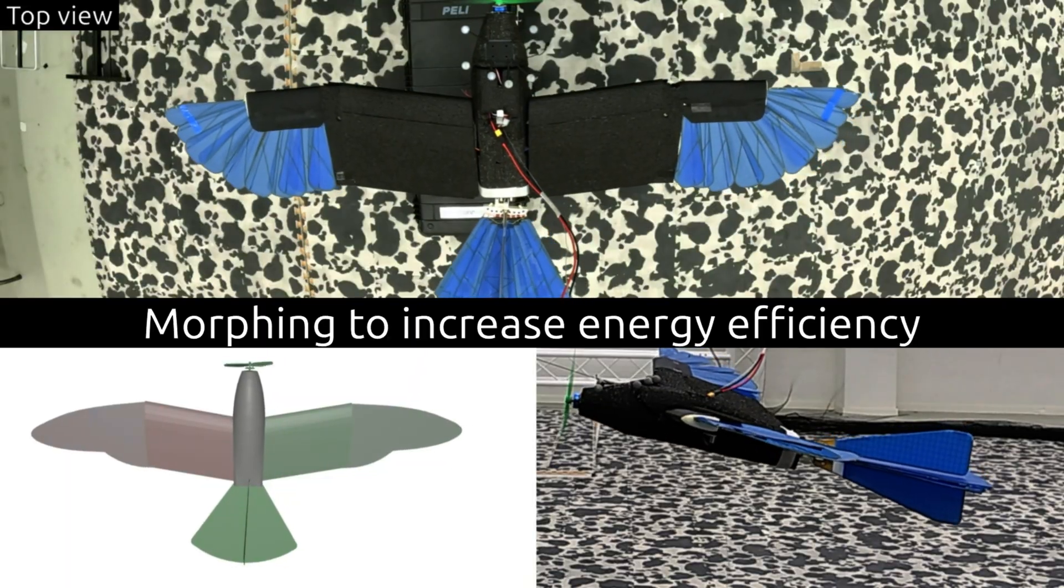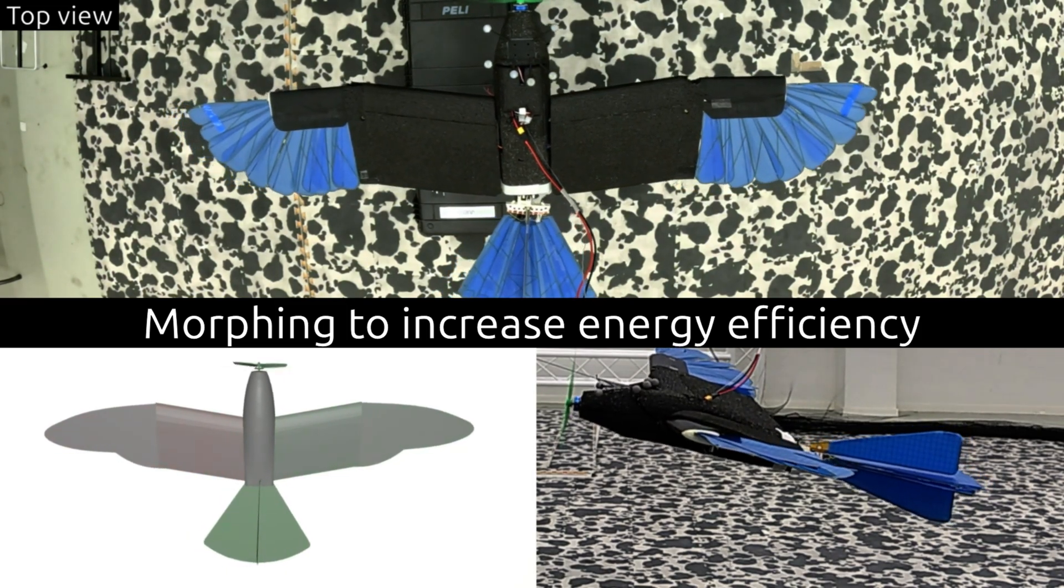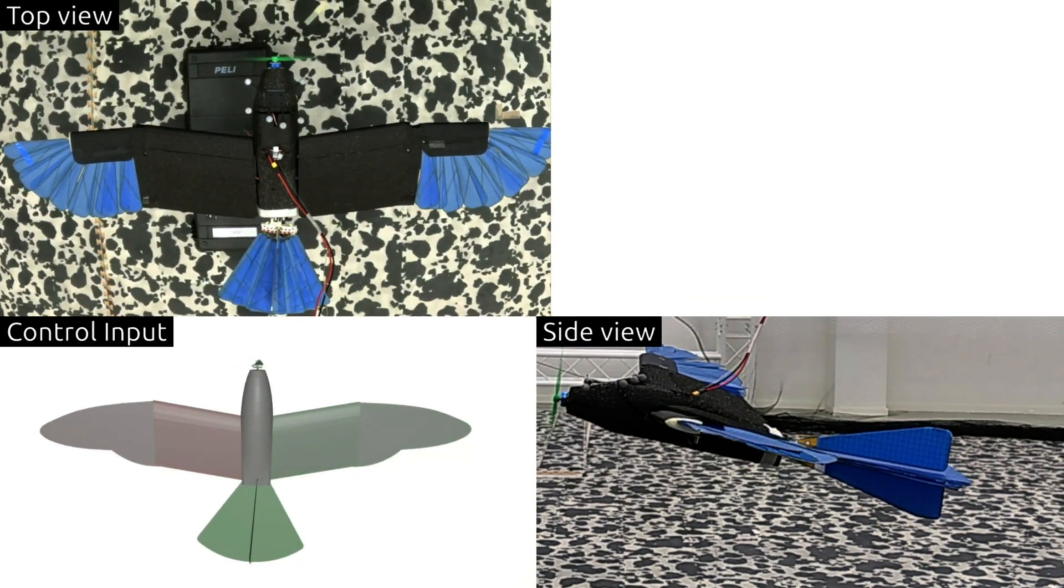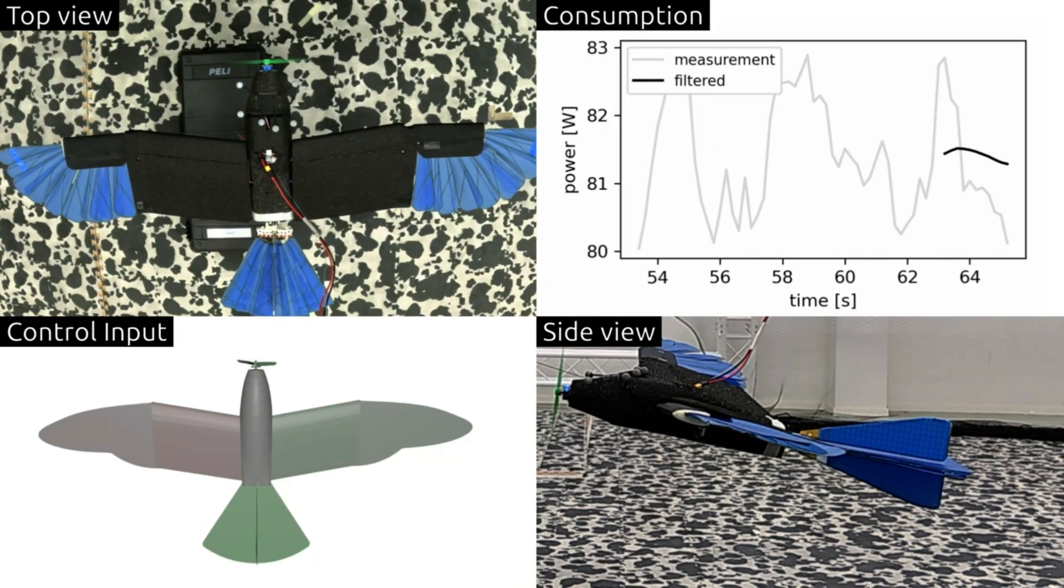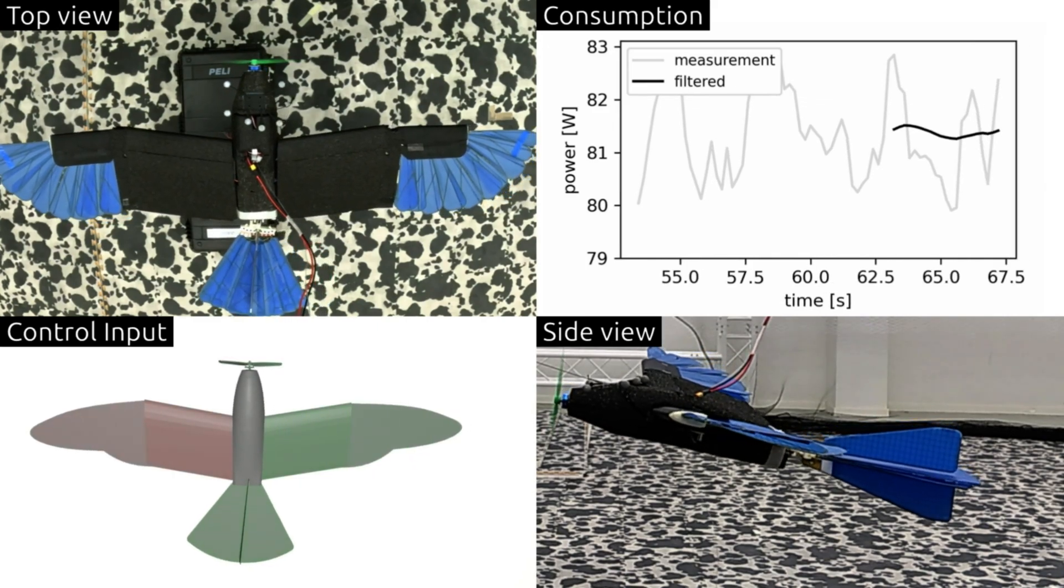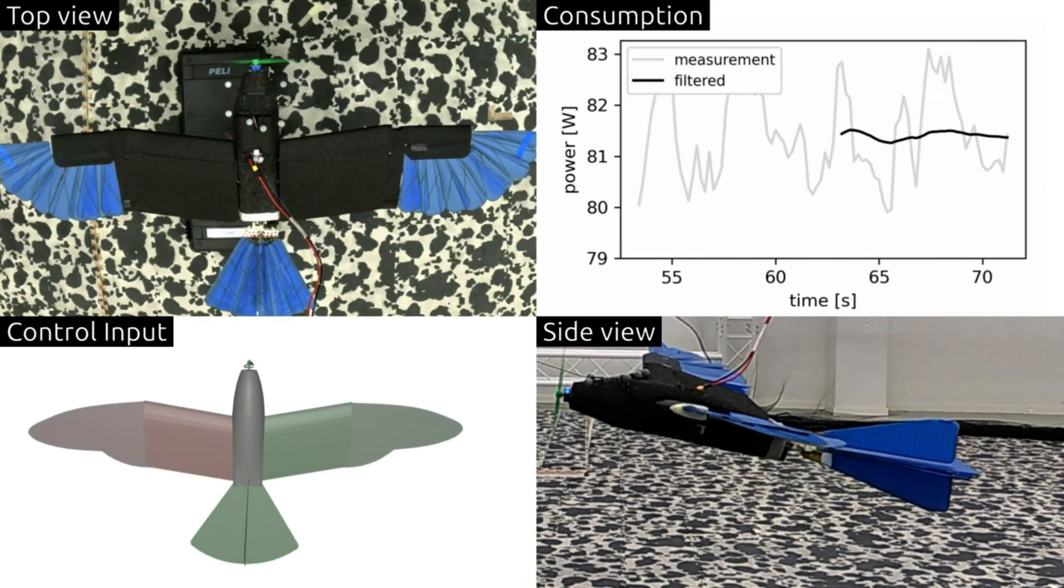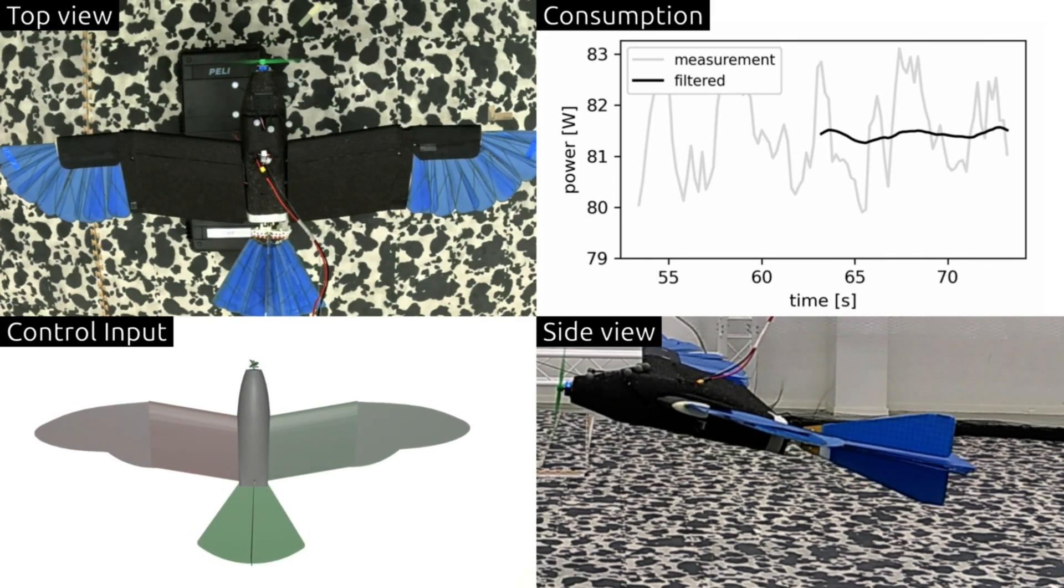The overactuated nature of avian-informed drones allows them to adapt their shape to different flight speeds. We change the center position of wing sweep, wing twist and tail sweep using Bayesian optimization to increase energetic efficiency in flight.